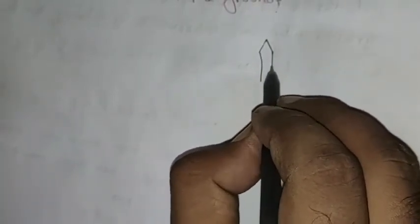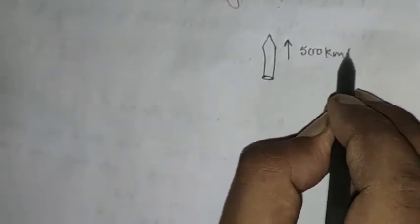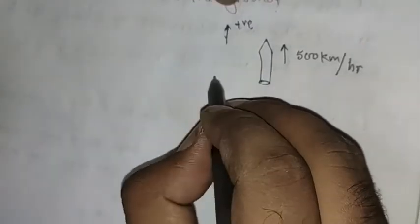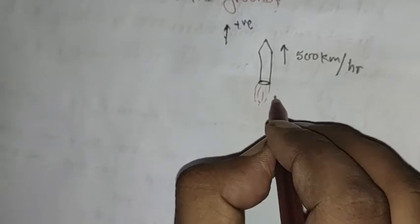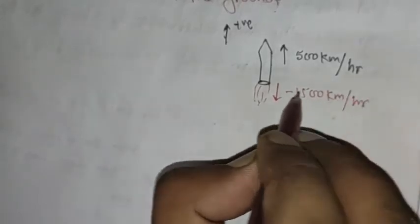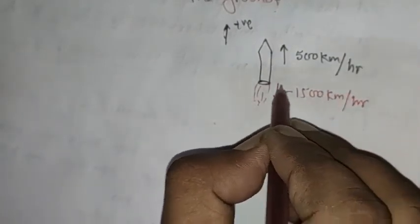Let us discuss this question. There was an airplane and its velocity was 500 km per hour. We are considering this forward direction as positive and the reverse direction as negative. Fuel is burning here, so its velocity relative to the jet is minus 1500 km per hour. One person sitting on the plane sees the combustion speed as 1500 km per hour. But what will a person standing on the ground observe?